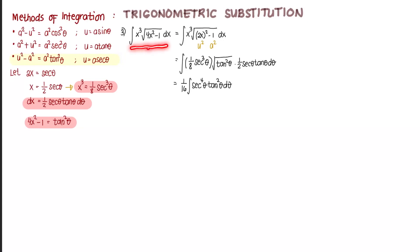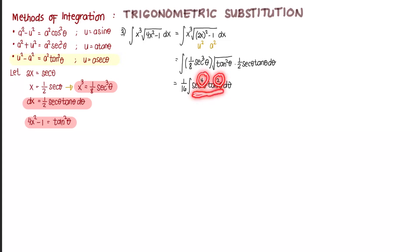So from the algebraic integrand we have transformed it into a trigonometric integrand. The pattern here is a product of secant and tangent where their exponents are even integers. From our discussion about trigonometric integrals, we recall that if the exponent of secant theta is even, what we do is factor out secant squared theta.